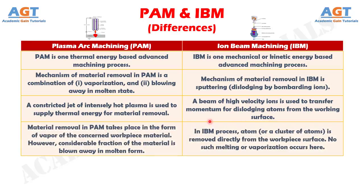Number 4: material removal in plasma arc machining takes place in the form of vapor of the concerned workpiece material; however, a considerable fraction of the material is blown away in molten form. Whereas in iron beam machining, an atom or a cluster of atoms is removed directly from the workpiece surface — no such melting or vaporization occurs here.